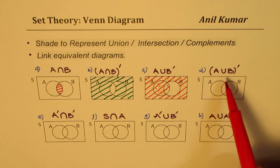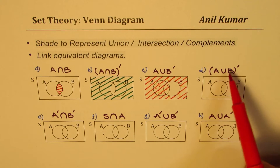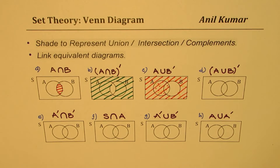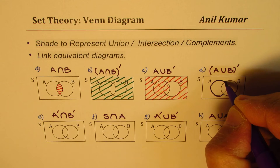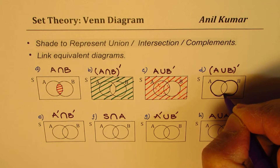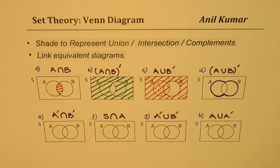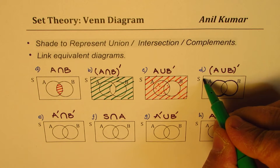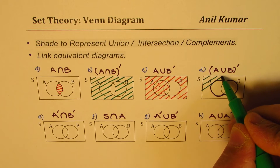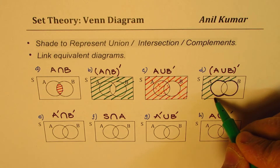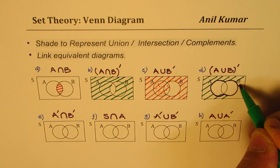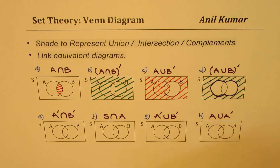Complement of A∪B means not inside the union. Let me mark the boundary of A∪B — we will shade everything outside this boundary. We don't want the inside, so everything outside this boundary is shaded. I hope by now you have learned the technique of shading.